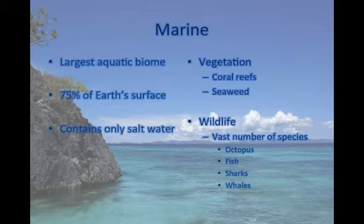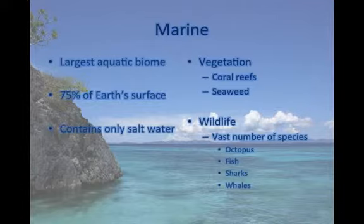Now we will discuss the aquatic biomes. The first aquatic biome is the marine biome. The marine biome is the largest aquatic biome, taking up 75% of the earth's surface. It contains only salt water, meaning only the oceans. The vegetation found in the oceans includes coral reefs or seaweed. There are a vast number of species of wildlife in the oceans, such as octopus, fish, sharks, or whales.